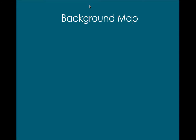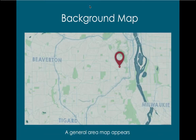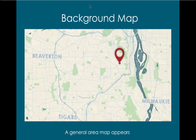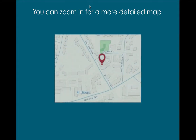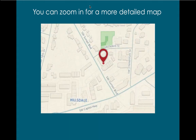After you pick a place, a background map appears — first a general map. You can zoom in for a more detailed map. A pointer indicates the exact location.